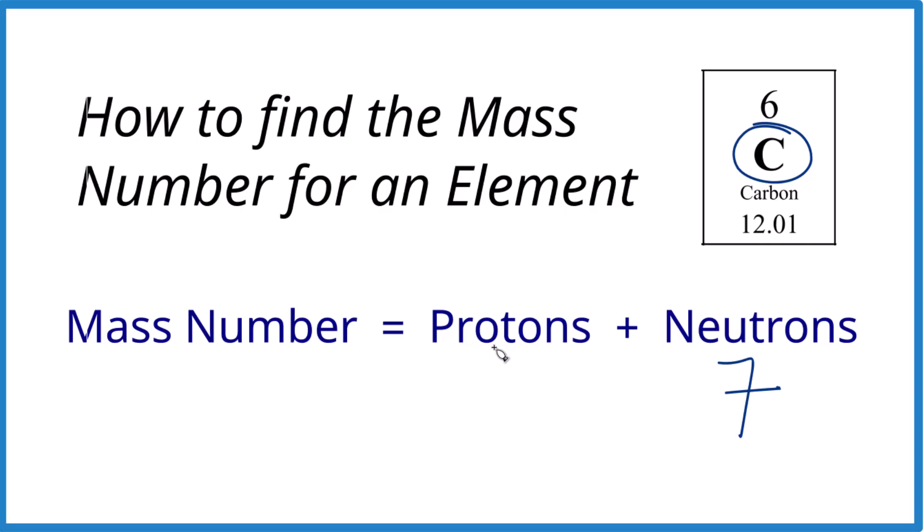The key to doing this problem is protons equals the atomic number right here. And since we said carbon, that's going to be 6. 6 plus 7 equals the mass number 13. You got it.